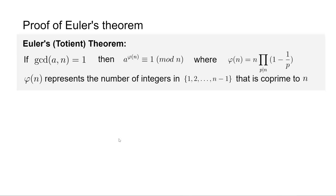Let's recap the theorem itself. It is also called Euler's totient theorem. If a and n are coprime to one another, then a to the power of φ(n) is congruent to 1 modulo n, where φ(n) represents the number of integers in the set {1, 2, ..., n−1} that are coprime to n. φ(n) is called Euler's totient function, and has a closed form: n times the product of (1 − 1/p) for all unique prime factors p of n.